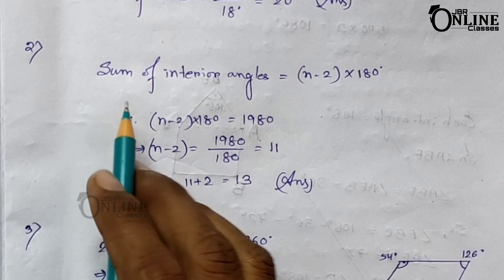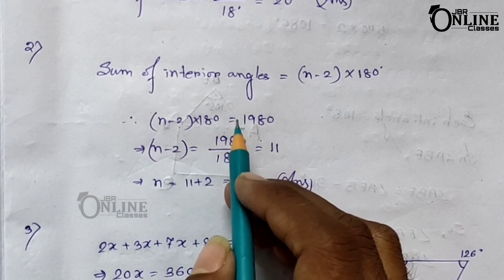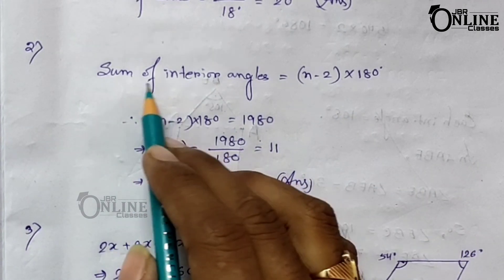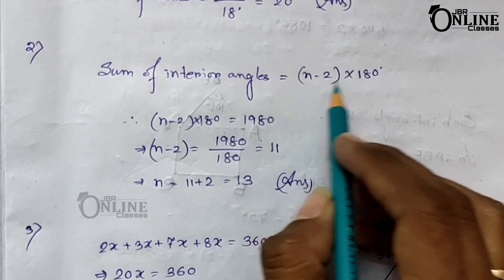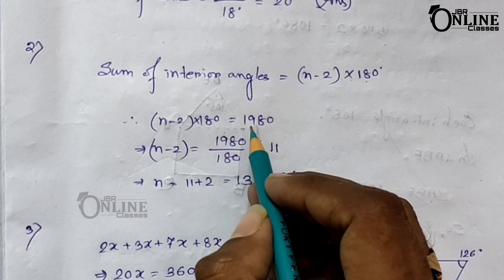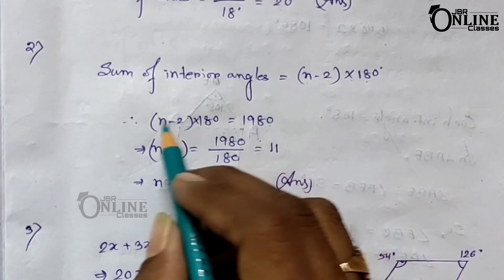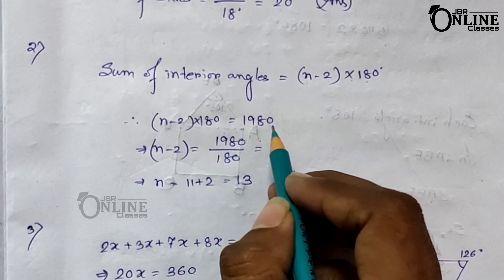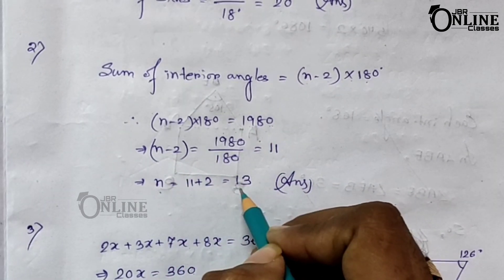Problem number two: how many sides has a polygon the sum of whose interior angles is 1980°? The formula is: sum of interior angles = (n − 2) × 180°. Given that the sum equals 1980°, so (n − 2) × 180 = 1980, and from that n = 13.